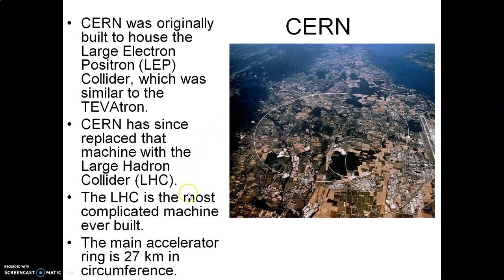The LHC is the most complicated machine that has ever been built, with a main accelerator ring of 27 kilometers in circumference. The internet, by the way, was actually first created at CERN in the early 1970s. The internet was originally built for two reasons: first, as a computer network by the United States Department of Defense designed to survive a nuclear war; and second, because at CERN, when doing experiments with the old LEP, the physics community wanted to send experimental data out to various universities around the world. These were the original two reasons why the internet was built.